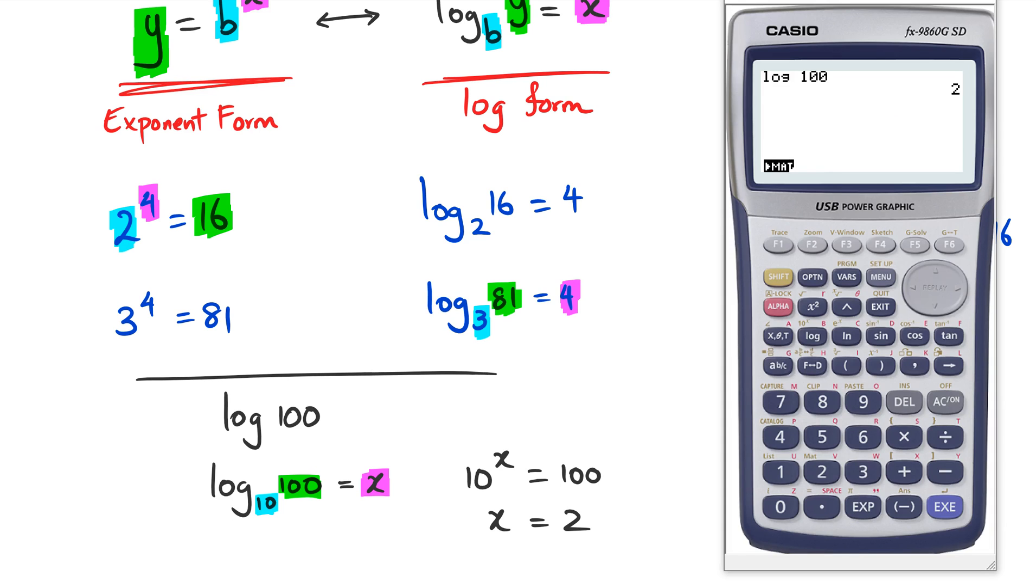If you look at my calculator's answer, that's what's actually done. When it says log of 100, it actually says 2, because it takes base 10. That's just your basic idea of exponent and log form, and the introduction of the calculator. The calculator always does log base 10.